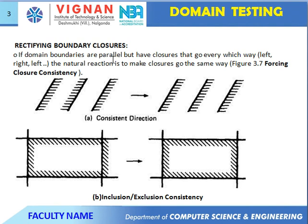Another type of boundary closure: if the domain boundaries are parallel but have closures that go every which way — left and right — the natural reaction is to make the closure go the same way. Converting: all boundaries become the same direction, either all closed or all open. Another conversion is inclusion and exclusion consistency — converting to complete inclusion, removing exclusion, making all boundaries consistently inclusive.